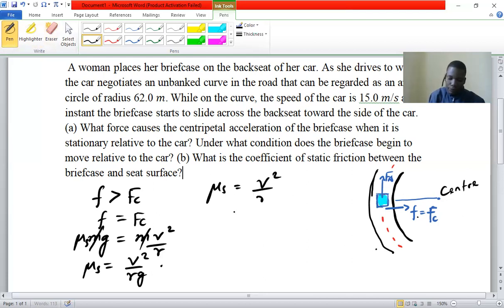So we have the speed is 15 meters per second, squared, divided by 62 times 9.81 meters per second squared. So once we punch that, what we have is 225 divided by 608.22, which equals 0.37.